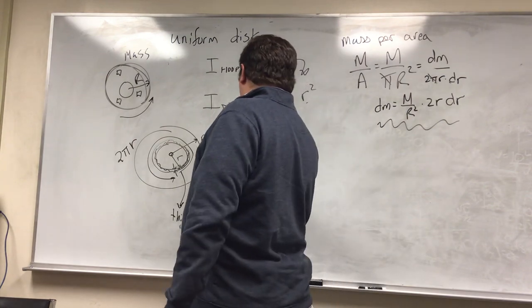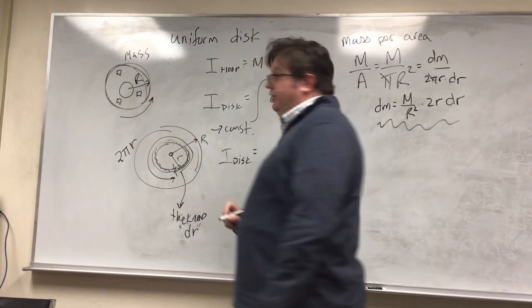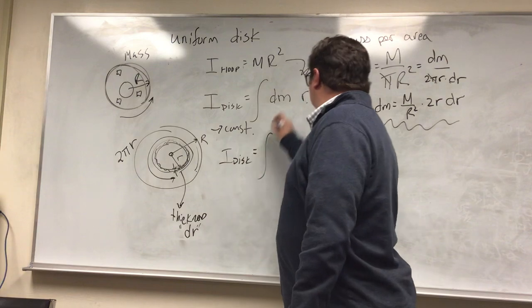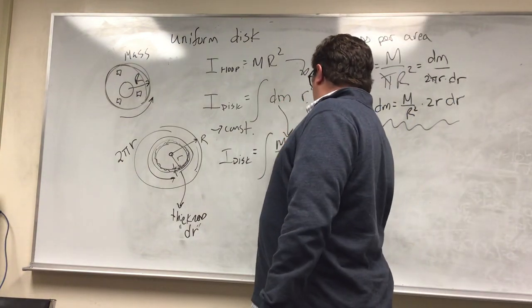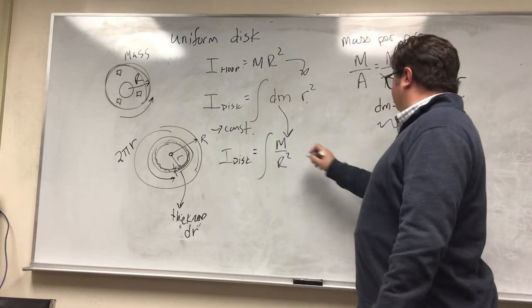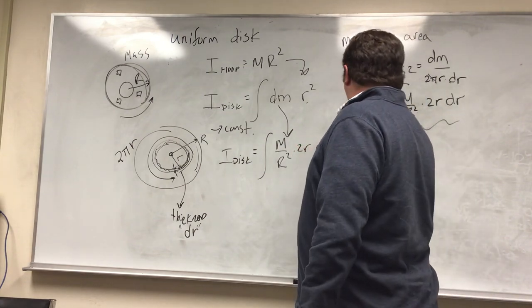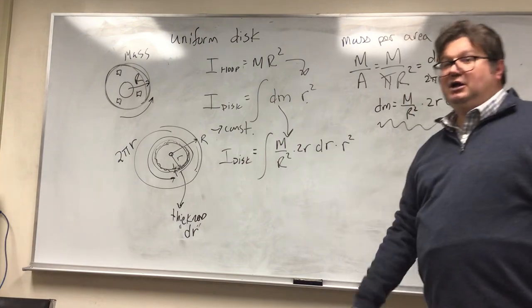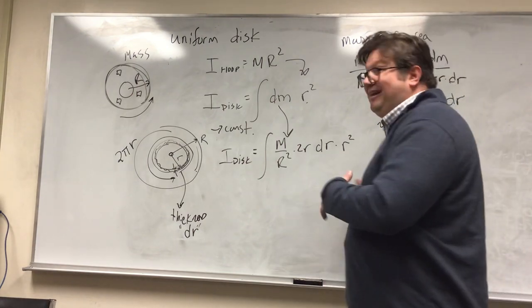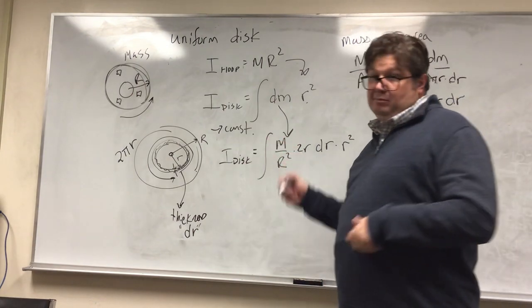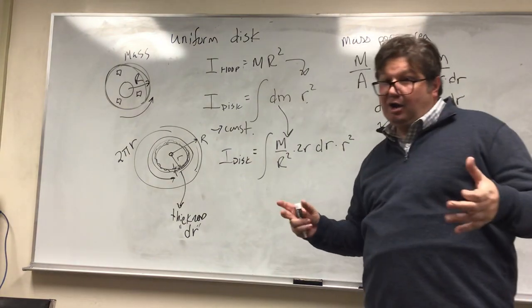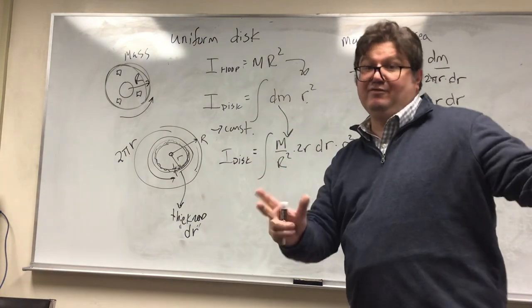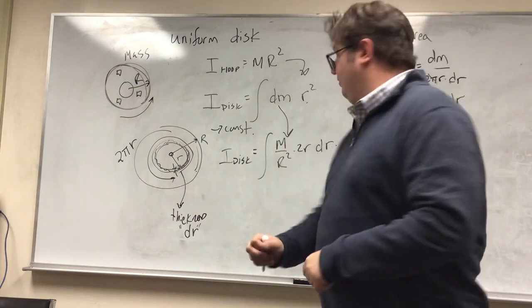So the moment inertia of a disk becomes, we just plug this in, m over r squared times 2r dr times r squared. Alright, so now we've got to do some arithmetic. First, let's get all the constants out. m, that's the mass of the whole disk. That's a constant. Big R. Remember, big R is the radius of the whole disk. That's a constant. We can pull that out. 2, 2 is a constant.